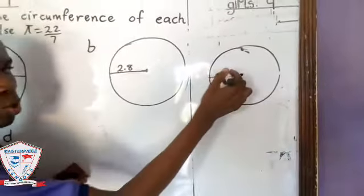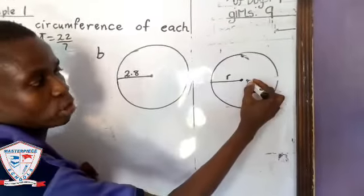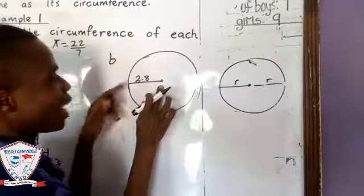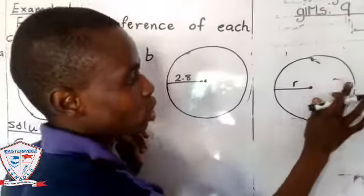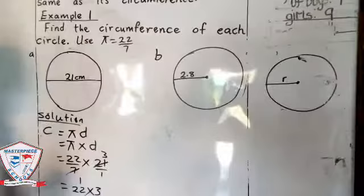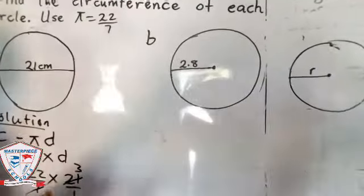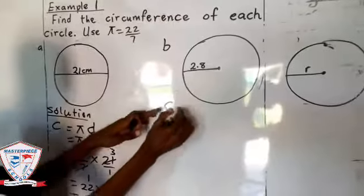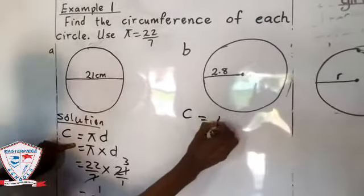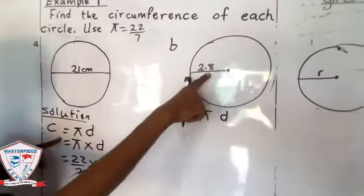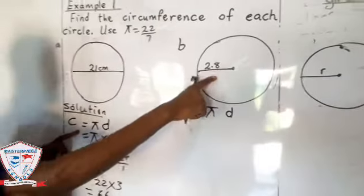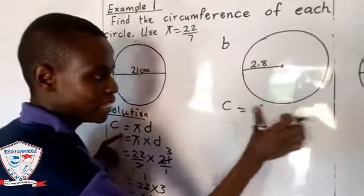But when the line starts from the middle like this, it is radius. Diameter consists of two radii. So this is radius here. You cannot use the formula we used for this as πd because this is not diameter - this is radius. So you don't use πd.